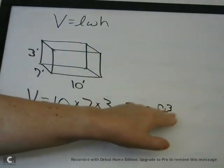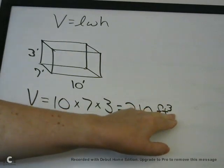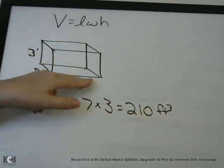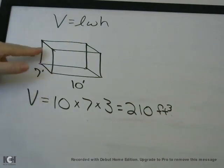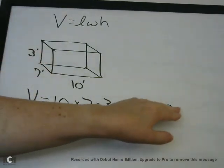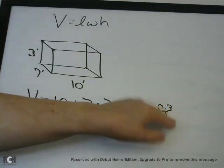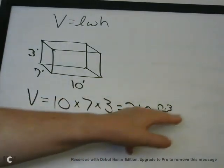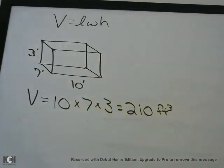So the answer will be feet cubed. Cubed means it has a 3 for the exponent, because here you're doing 10 feet times 7 feet times 3 feet — you're multiplying three feet together, so it's going to be feet cubed. So again, if you are doing a multiple choice question and all of the answers have a cubic unit on them, you're probably doing a volume question.